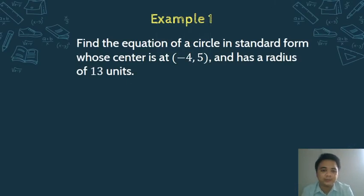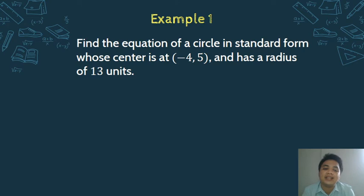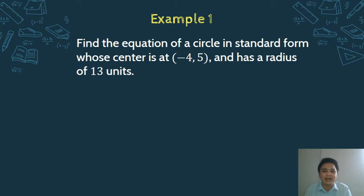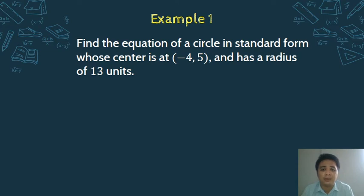For Example 1, let us find the equation of a circle in standard form whose center is at negative 4 and 5, and has a radius of 13 units. For every worded problem, we follow certain steps. There will be a separate video on the proper way to solve worded problems. First, you must identify what the problem is asking — what is asked?